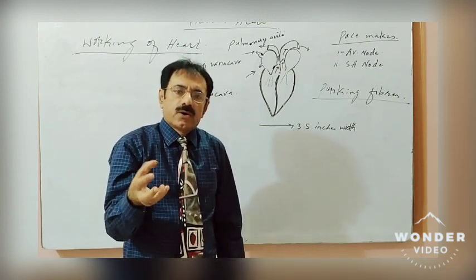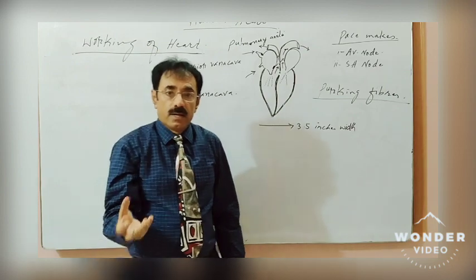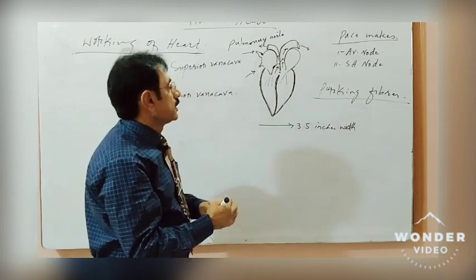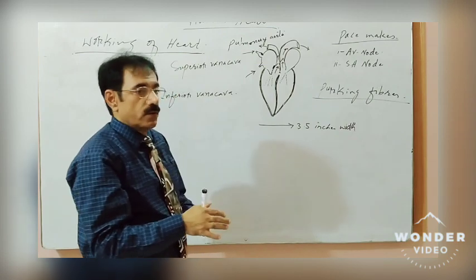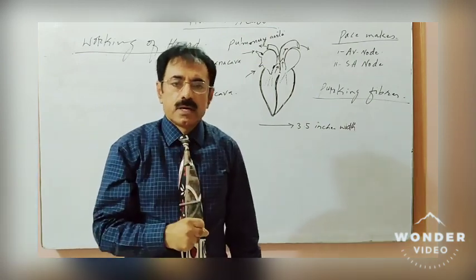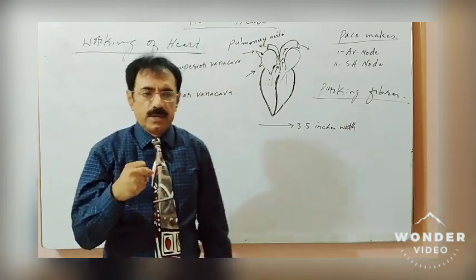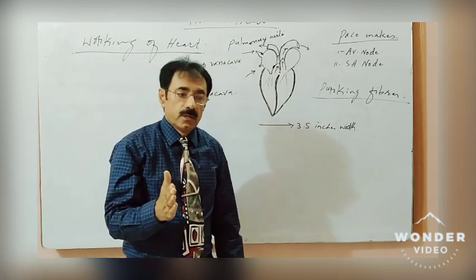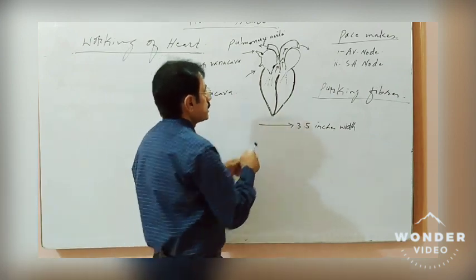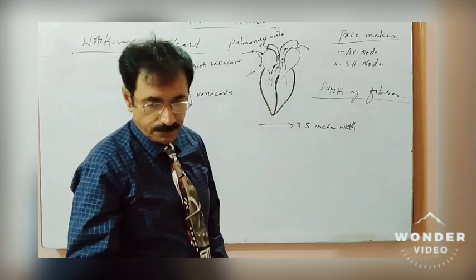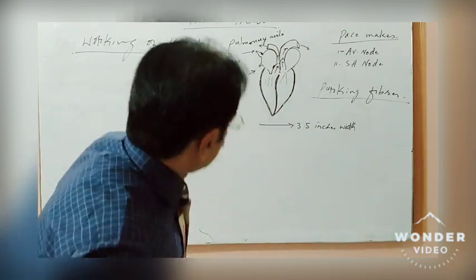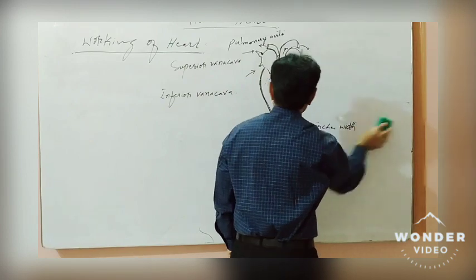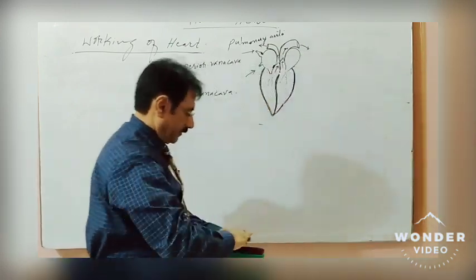Carbon dioxide gas diffuses out into the air present in the lungs, and the oxygen present in the lungs diffuses into the blood. The blood thus becomes oxygenated.